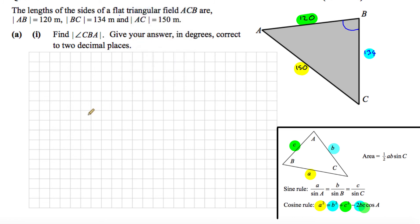So here we go. I'm going to set up the cosine rule, which says that A squared, 150 squared, is equal to B squared, which is 134 squared, plus C squared, 120 squared, minus twice BC, minus twice the blue by the green by the cosine of the angle, which for us is angle B.